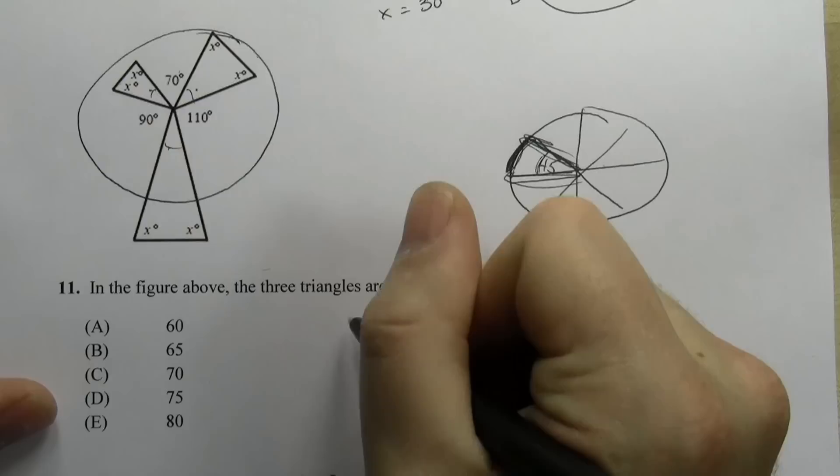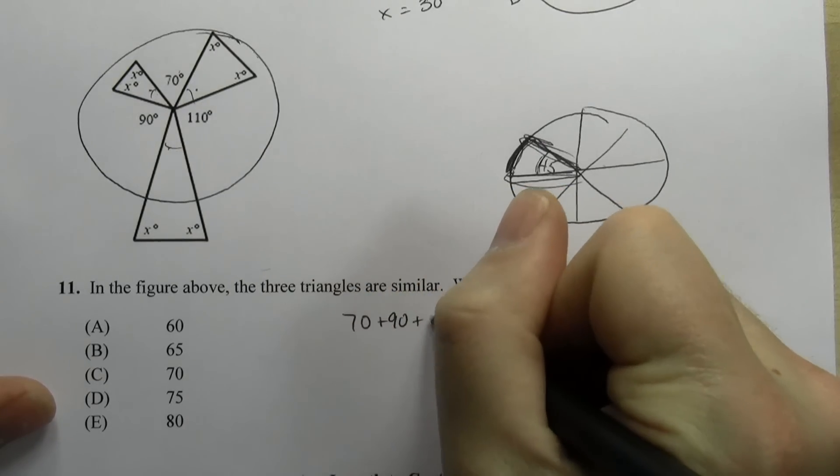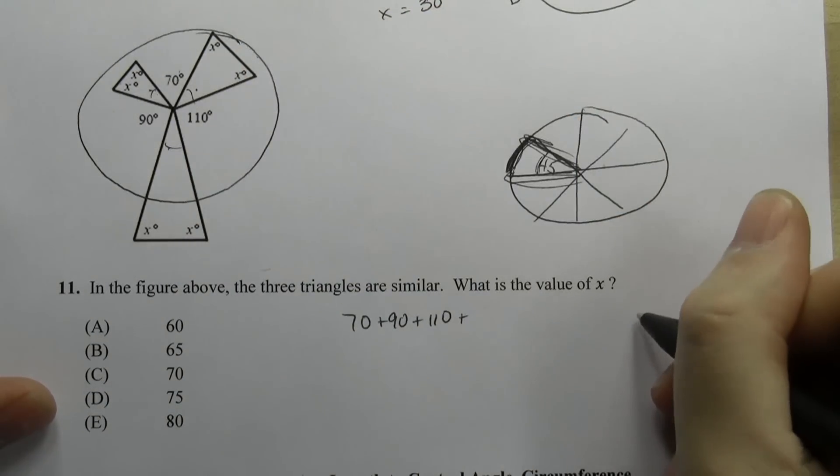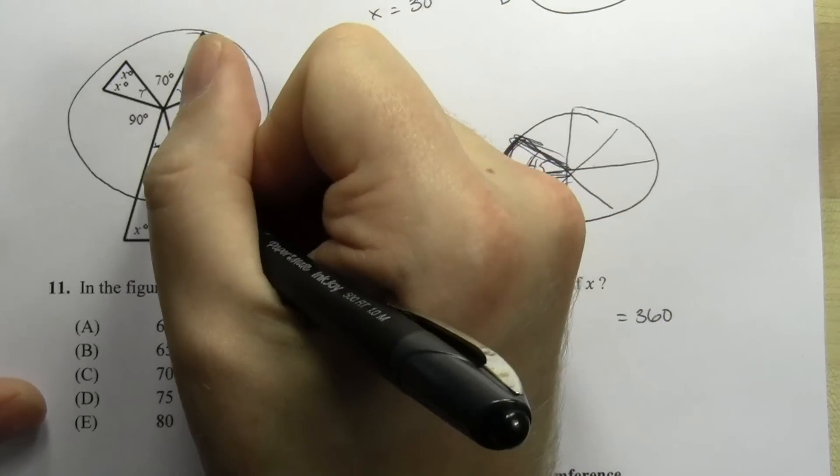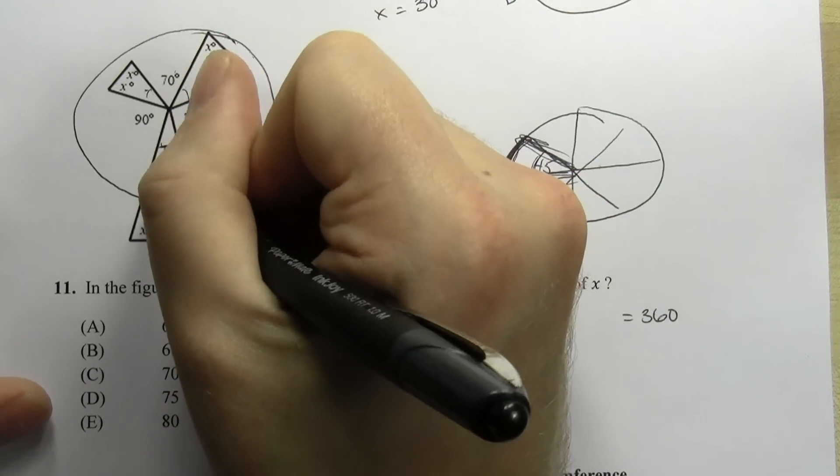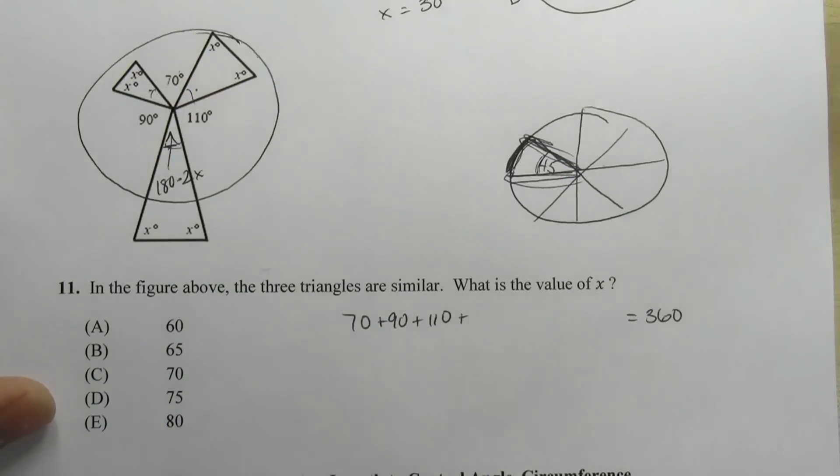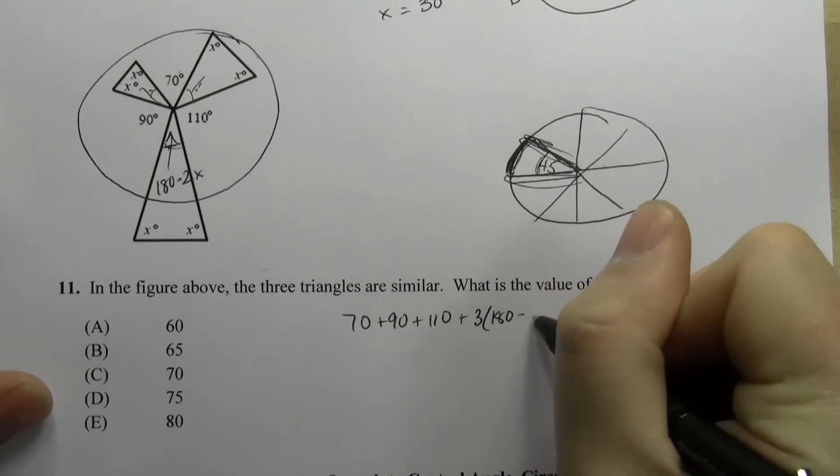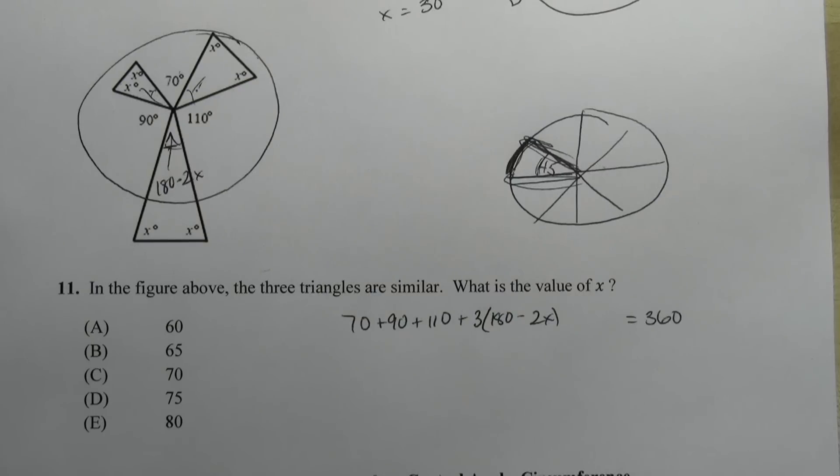So we know that 70 plus 90 plus 110 plus whatever these three angles are is going to equal 360. Well, how can we represent these angles? The easy way to do it is say, well, in one triangle, I know it's 180 degrees and I already have two X's, so I know this angle is going to equal 180 minus 2X. That's going to be the same for this and the same for this because the angles are all the same. So it's 3 times (180 minus 2X). So there's our equation. We can just solve for X at this point.